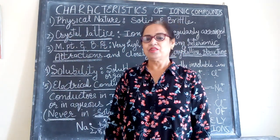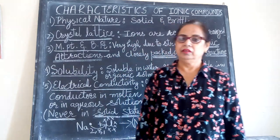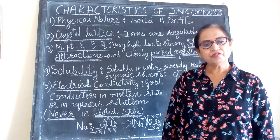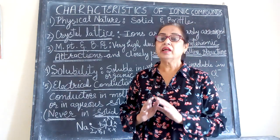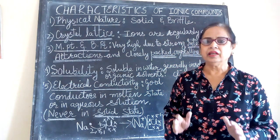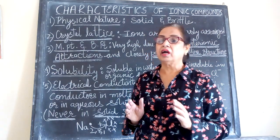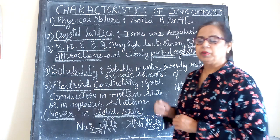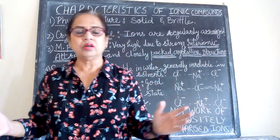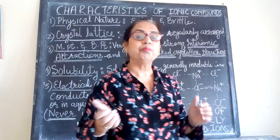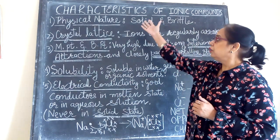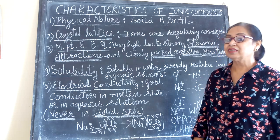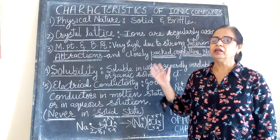Welcome again to my class. The next topic is chemical bonding, and we have covered how the electrovalent or ionic bond is formed. We understand that stable electronic configuration is the basic concept behind electrovalent bonding. When there is ionic bonding between a metal and a non-metal we get an ionic or electrovalent compound. Generally all salts are ionic or electrovalent compounds. Now we need to learn about the characteristics of these compounds — what are the properties of ionic or electrovalent compounds.